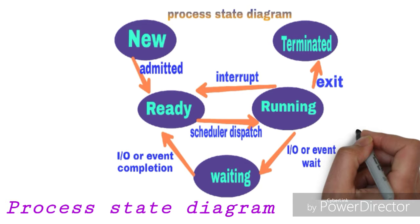From the running state, a process can change its state to the terminated, waiting, or ready state. A process will be terminated when it finishes its execution with the CPU. A process can also be interrupted forcefully while in the running state and sent back to the ready state.